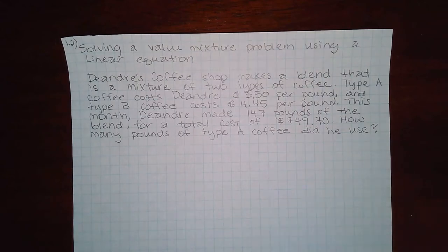Type A coffee costs D'Andre $5.50 per pound, and type B coffee costs $4.45 per pound.